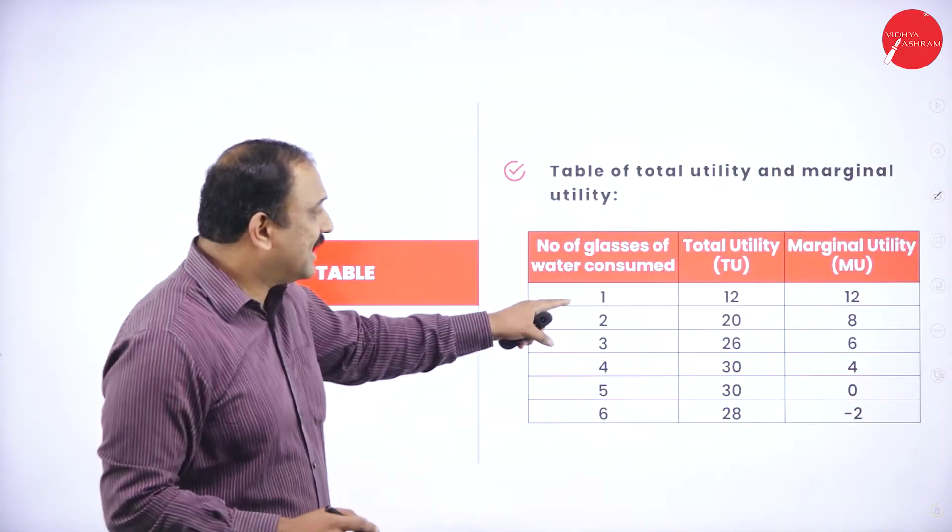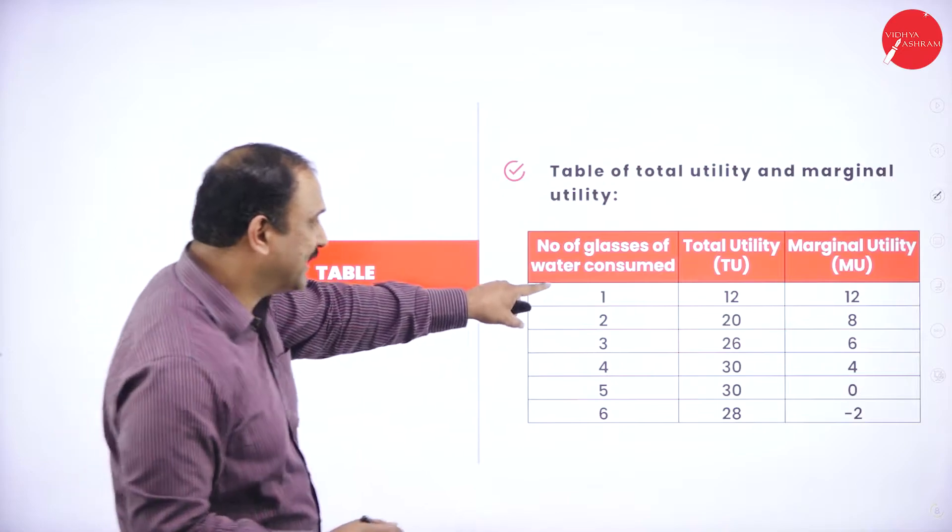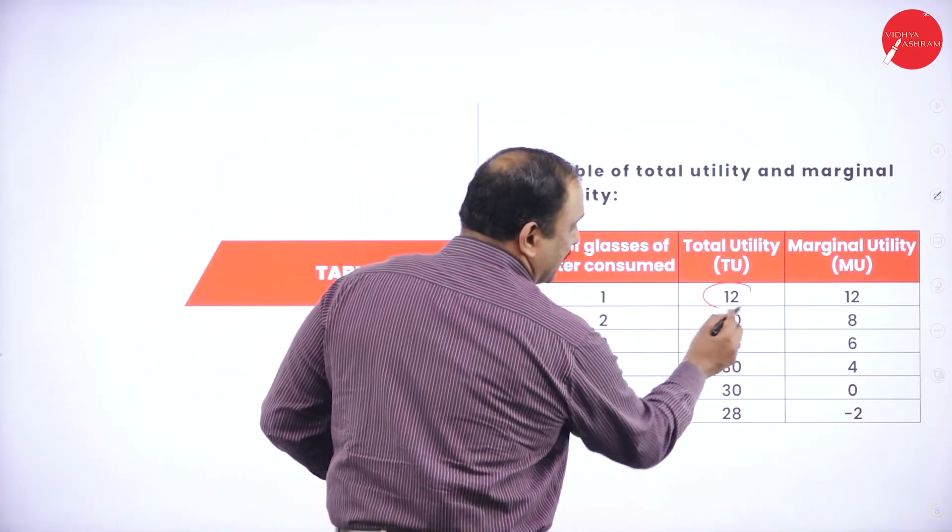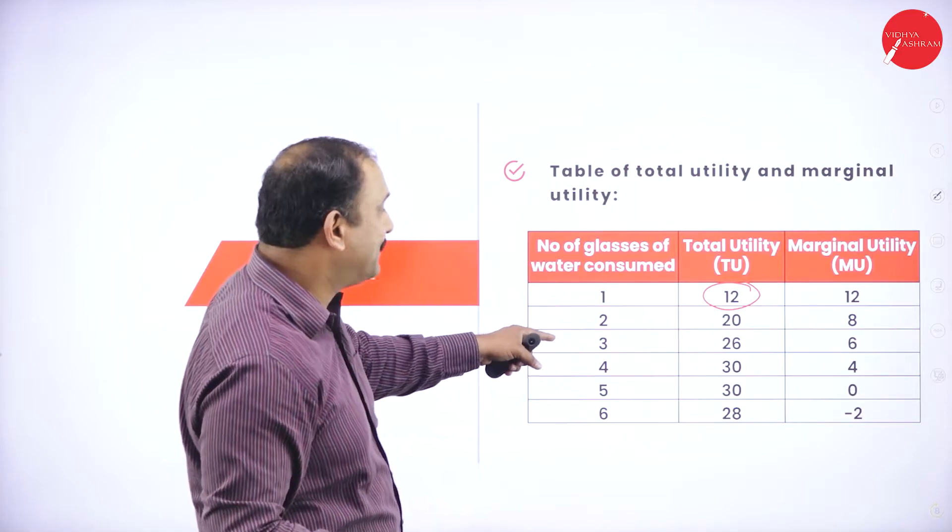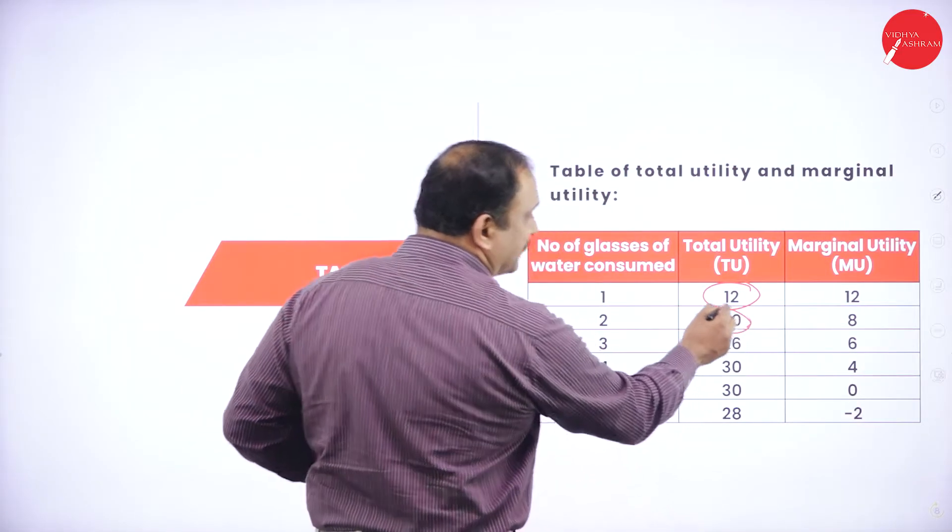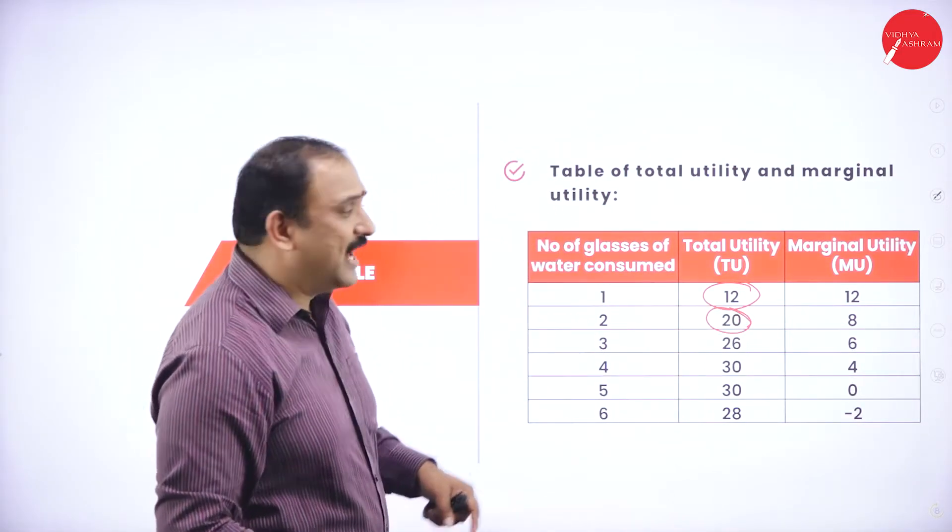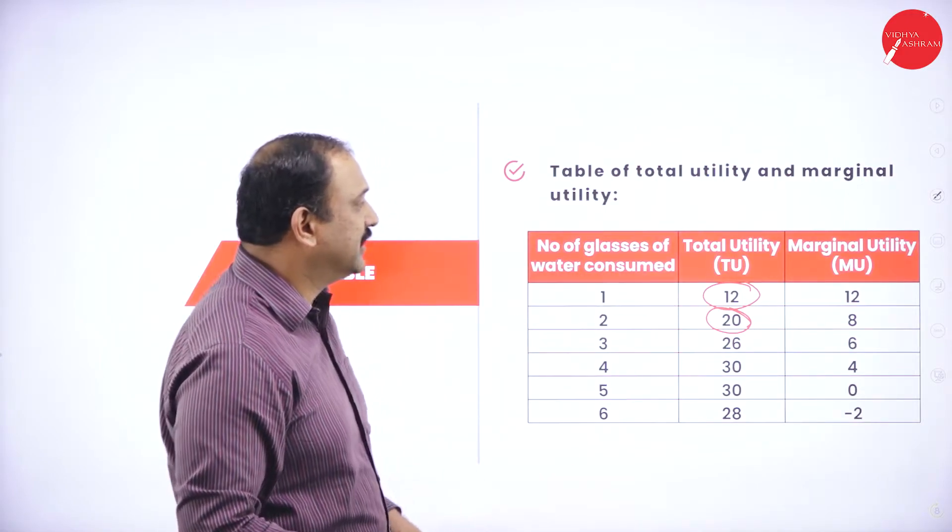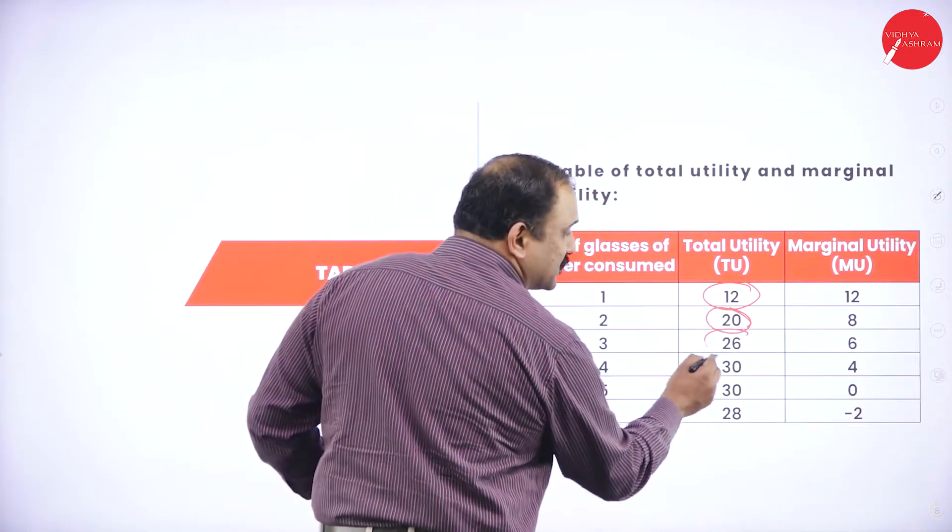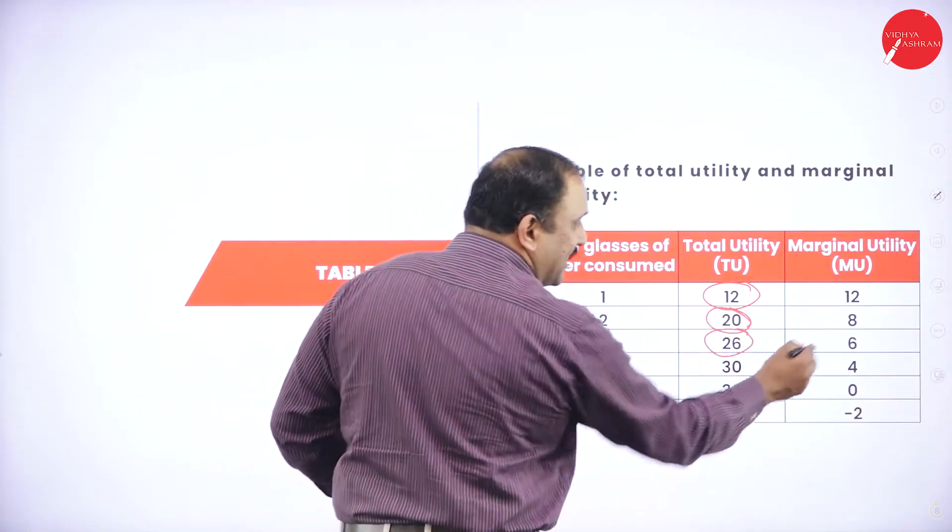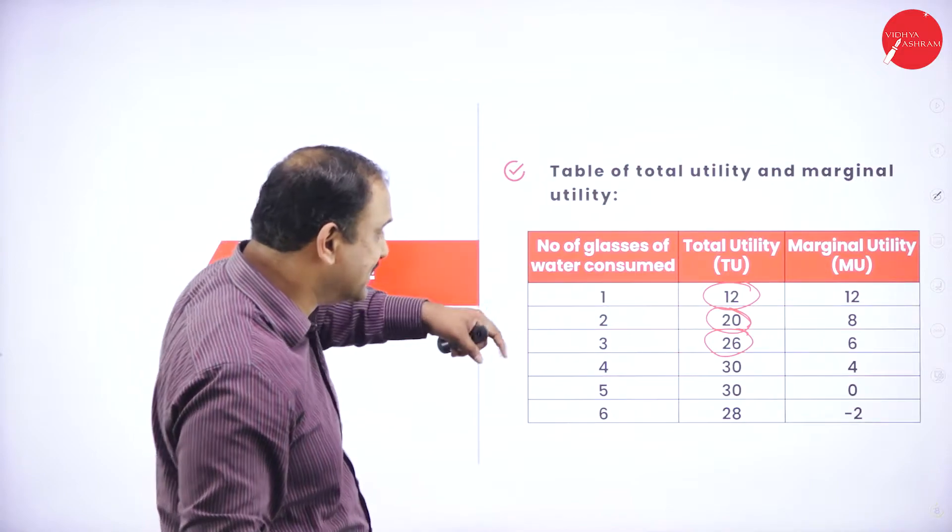Number of glasses consumed: at the first glass, utility value is 12, marginal is also the same. The next glass, the total utility becomes 20 and the marginal utility becomes 8. The next glass, the total utility is 26 but the marginal utility starts becoming 6. It's now decreasing. So as this starts going up, this would start coming down.